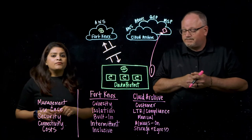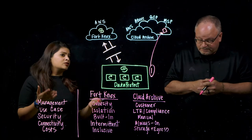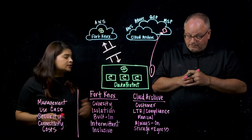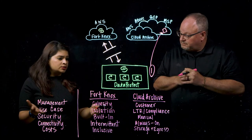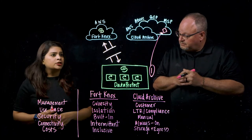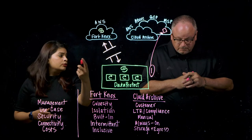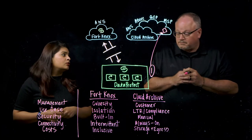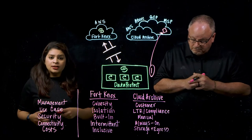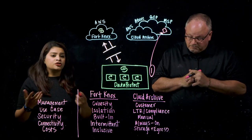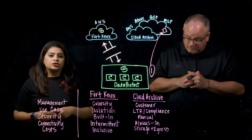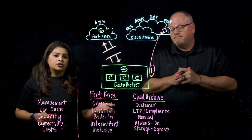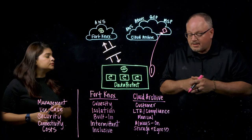In the case of Fort Knox, a customer doesn't want to have to do it all themselves. They can outsource the responsibility of vaulting and securing the data to Cohesity through Fort Knox, and they don't have to worry about the operational aspects such as do-it-yourself approaches like shipping tape off-site or managing parallel infrastructure for data vaulting.